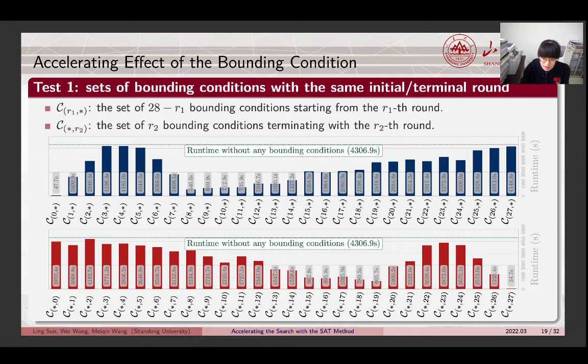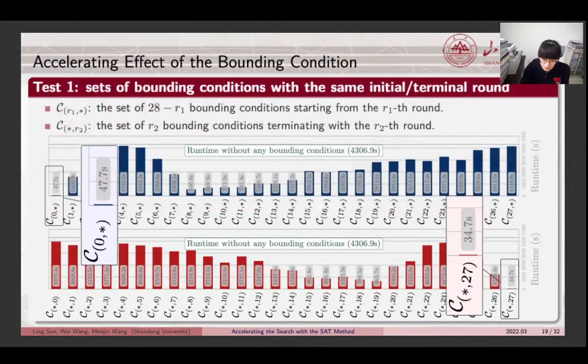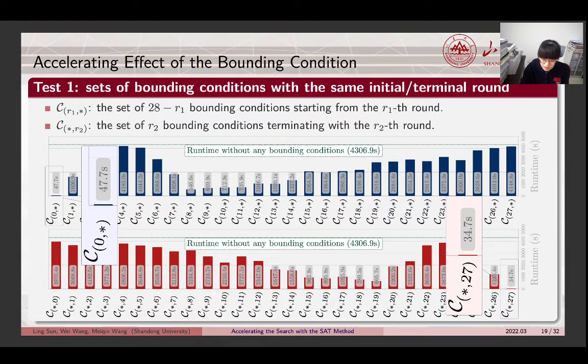In the first test, we consider the set of bounding conditions with the same initial or terminal round. A comparison of the runtime is illustrated in the figure. From the results, we note that all the 56 sets indeed shorten the runtime. Thus, the automatic search with the SAT method can be accelerated after integrating some of this bounding condition. Besides, it also can be notified that the degrees of improvements for different sets exhibit apparent variation. The sets C0 star and C star 27 result in better performances.